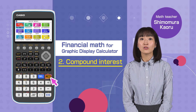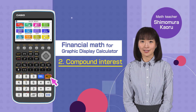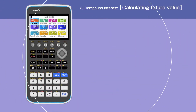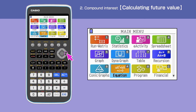Switch on your calculator by pressing the AC button. Press the menu button to open the main menu, then move the cursor or press C to select Financial.